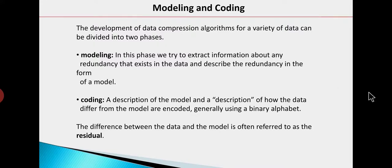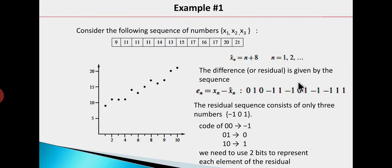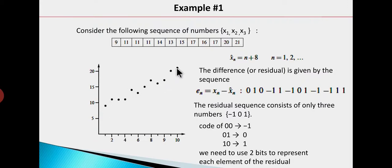Now let's see with the help of examples so you can better understand what is modeling and coding. Suppose this is a sequence of numbers which we have to compress. If you plot the graph with these numbers, you can see that from one point to another, if you draw a straight line, the numbers are falling on or near that straight line.